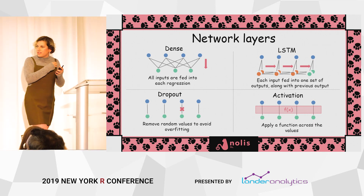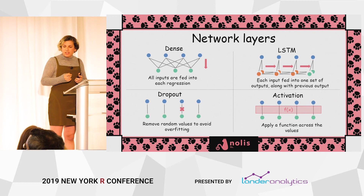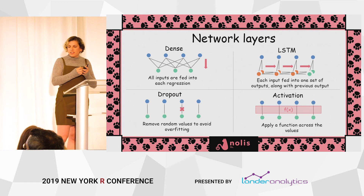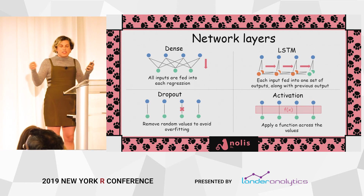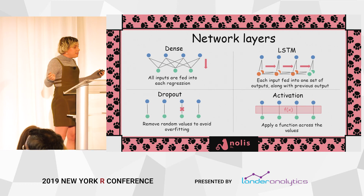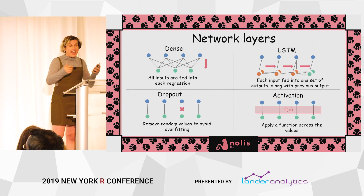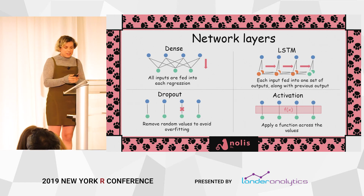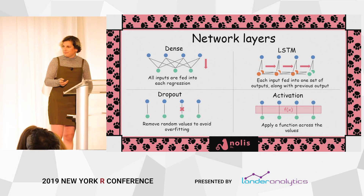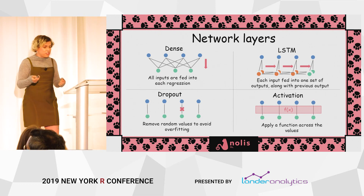The activation layer applies a function across the values. For example, you may want to ensure all outputs add up to one, or are all at least zero. You can apply those constraints with an activation layer. Those are the tools we'll use when creating our network.